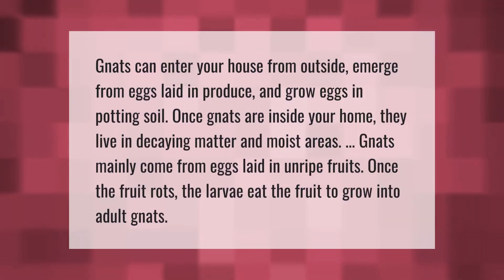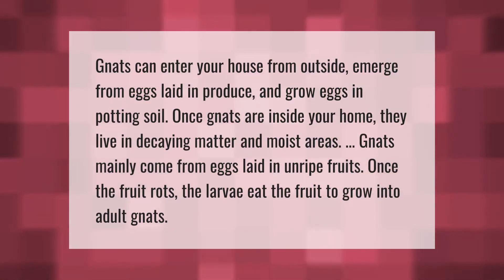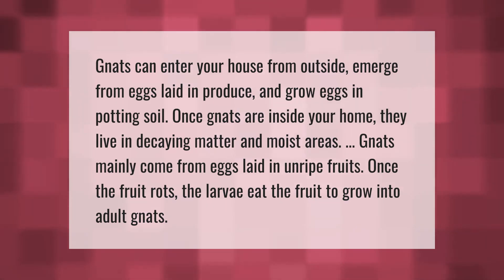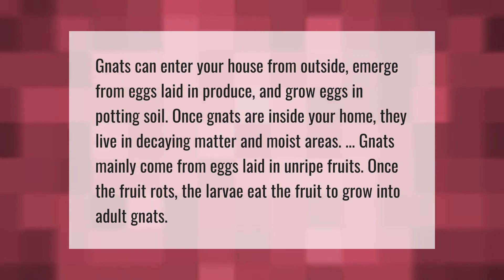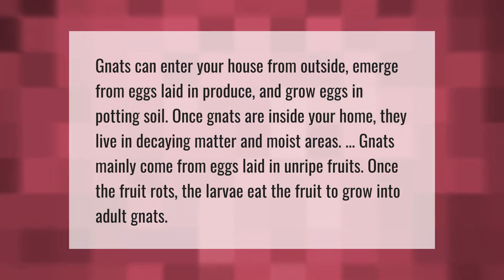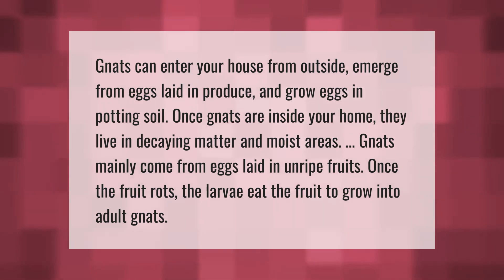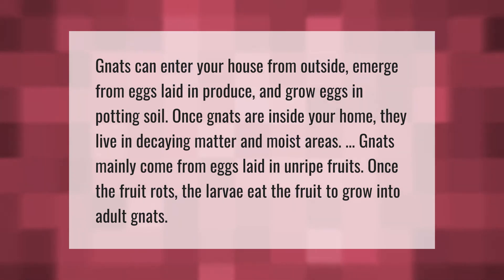Gnats can enter your house from outside, emerge from eggs laid in produce, and grow from eggs in potting soil. Once gnats are inside your home, they live in decaying matter and moist areas. Gnats mainly come from eggs laid in unripe fruits — once the fruit rots, the larvae eat the fruit to grow into adult gnats.